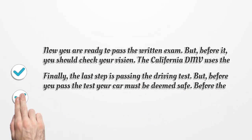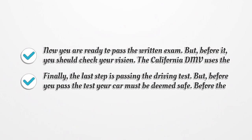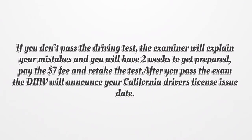Now you are ready to pass the written exam. But before it, you should check your vision. The California DMV uses the Snellen Chart or Optech 1000 Vision Tester to conduct the vision test. Finally, the last step is passing the driving test. Before you pass the test, your car must be deemed safe, and you should do a safety inspection. If you don't pass the driving test, the examiner will explain your mistakes and you will have two weeks to get prepared. Pay the $7 fee and retake the test. After you pass the exam, the DMV will announce your California Driver's License Issue Date.